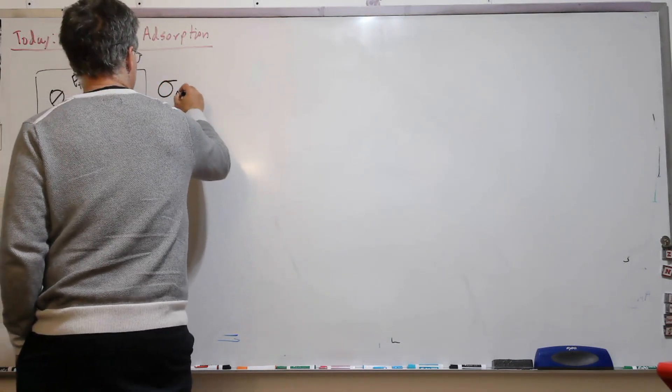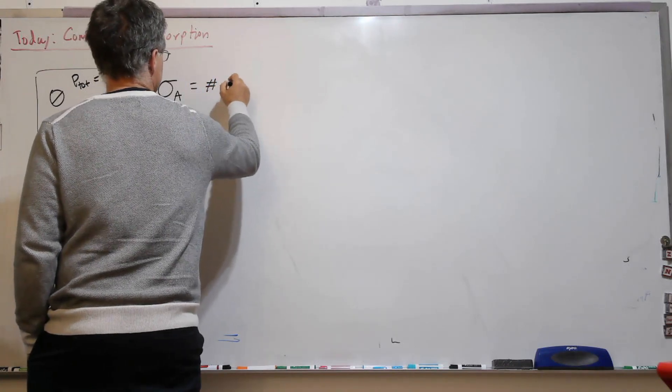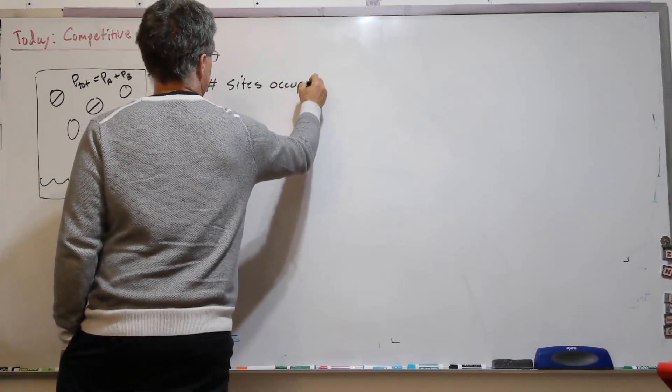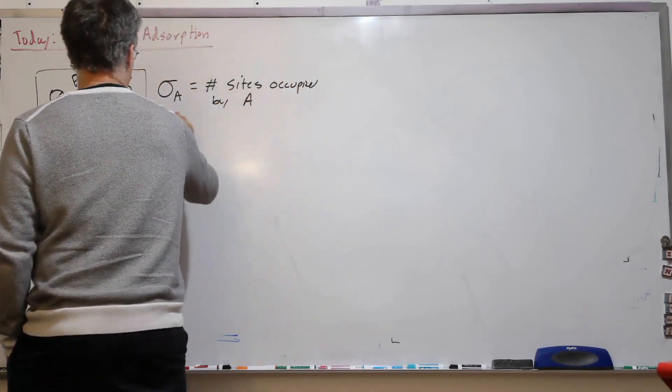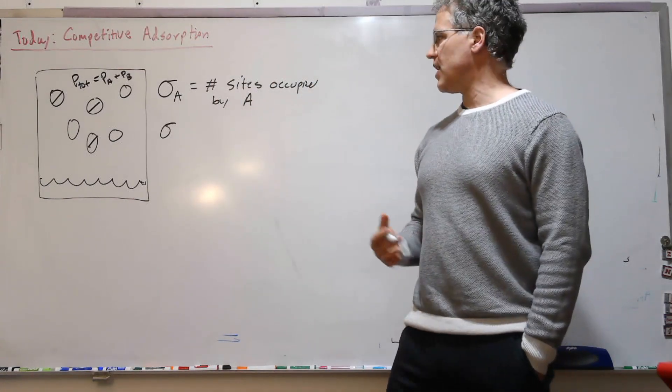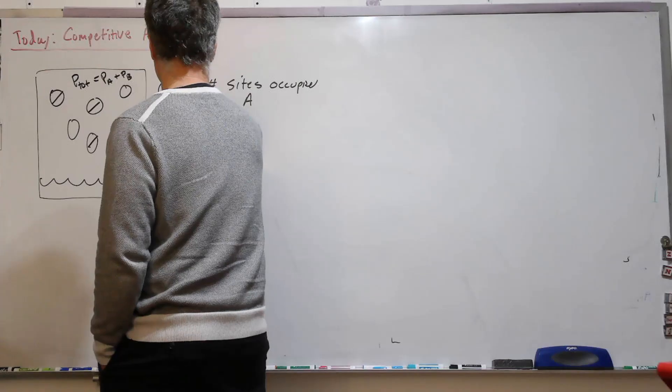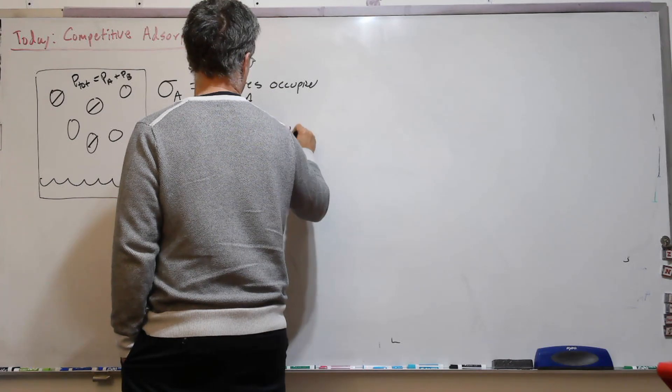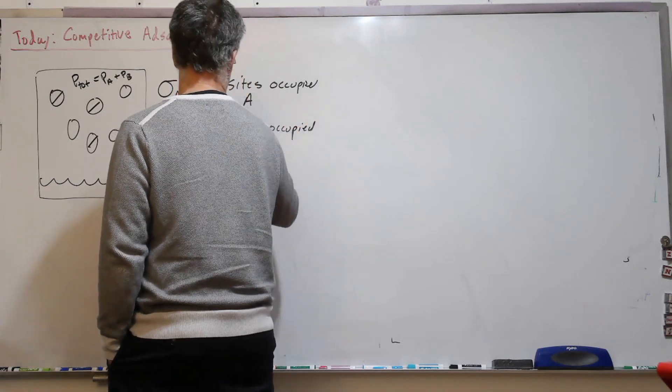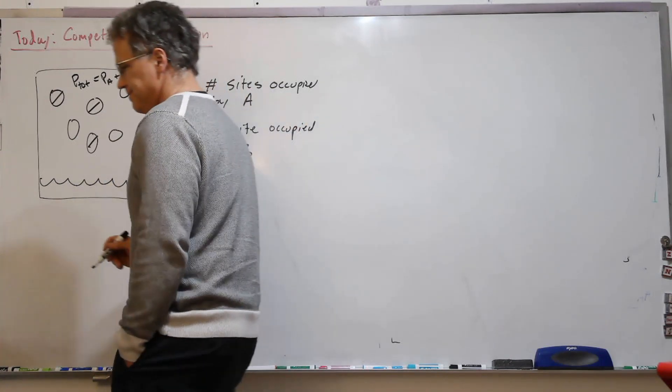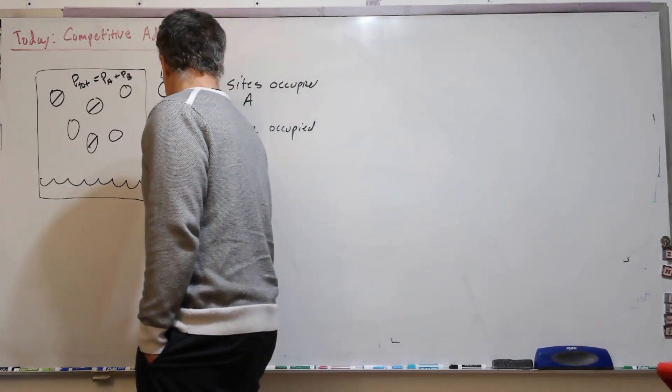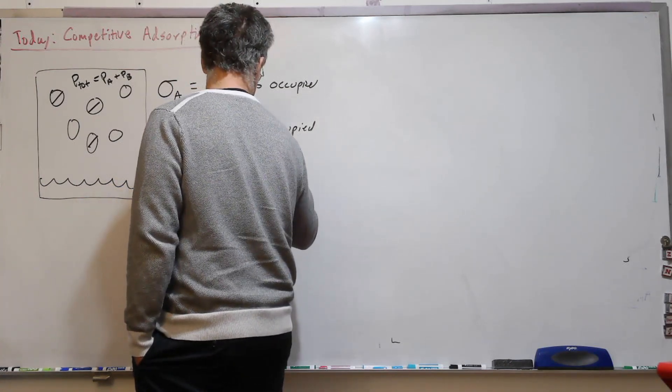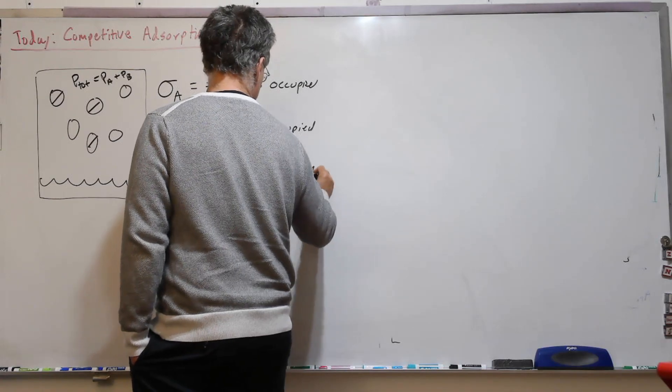Now we define sigma A as the number of sites occupied by A. Likewise, sigma B will be the number of sites occupied by species B. Then sigma bar is the number of unoccupied sites.